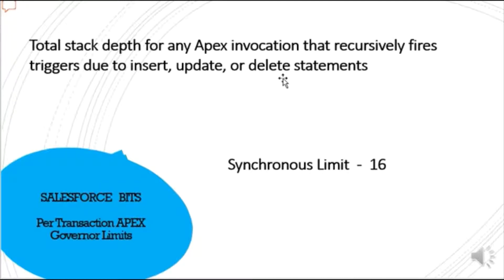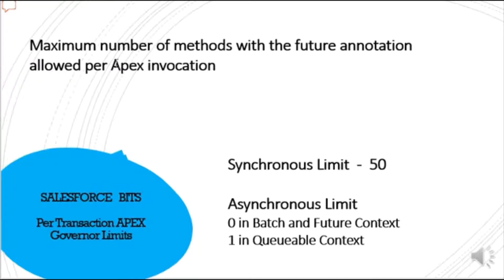Total stack depth of any Apex invocation that recursively fires triggers due to insert, update, or delete statements — stack depth means you call a trigger from an insert or update context, either before or after trigger, and it can recurse up to a maximum of 16 levels. For example, a before-insert trigger updates something, which calls the trigger again, and this can repeat recursively up to 16 levels.